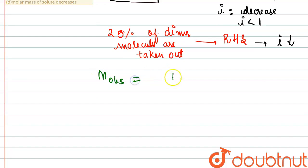Now we know that the expression of observed molecular mass is equal to the real molecular mass divided by i. So as we can see that van't Hoff factor is decreasing, so we can say observed molecular mass will be increasing. So we can conclude that because of this, average molar mass of solution will be increasing.